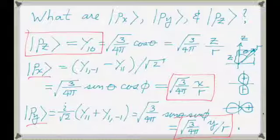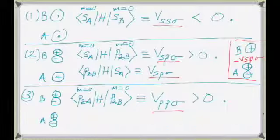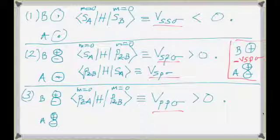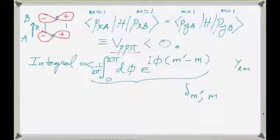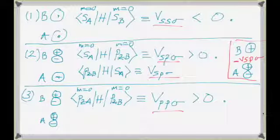Last time we defined the matrix elements that we're going to need, and you can look up in tables — like the famous Slater-Koster tables, which are uploaded on iLearn, the original paper by Slater and Koster. Everything will be written in terms of these matrix elements: S-Sigma, SP-Sigma, PP-Sigma, and PP-Pi.